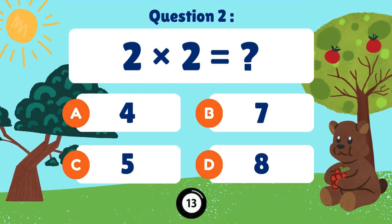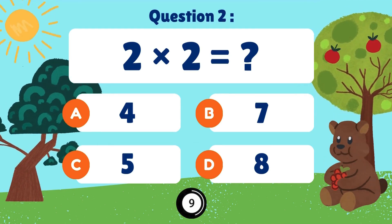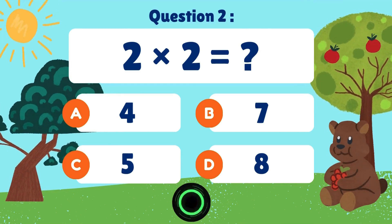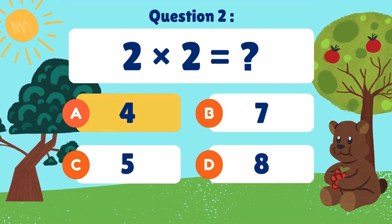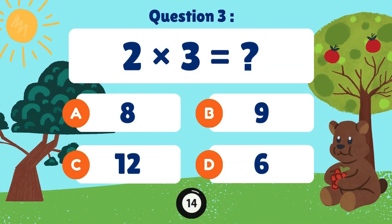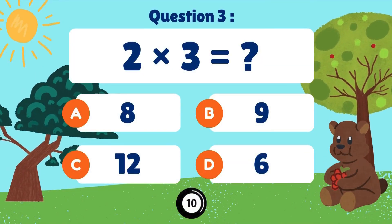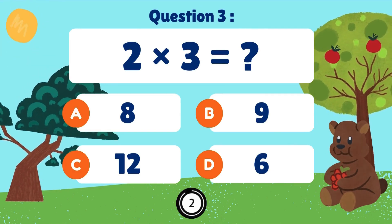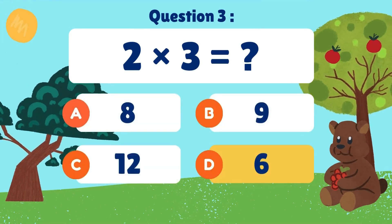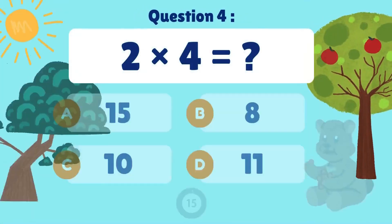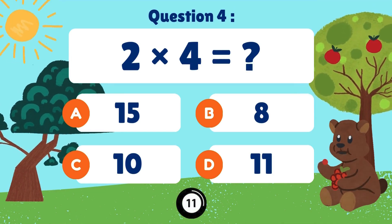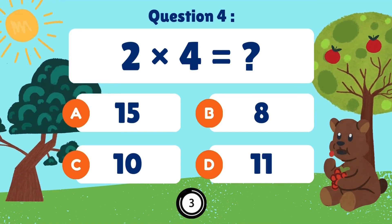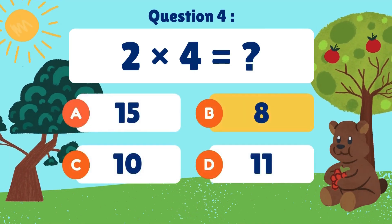Two times two. Two times two equals four. Two times three. Two times three equals six. Two times four. Two times four equals eight.